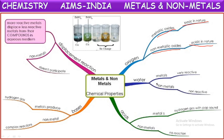When metals react with water, generally they form their metal hydroxides and hydrogen gas. But in general, nonmetals do not react with water. When metals react with acids, they form salts and hydrogen gas. Nonmetals generally do not react with acids. When metals react with bases, they produce salt and hydrogen gas. Nonmetals form complex compounds.